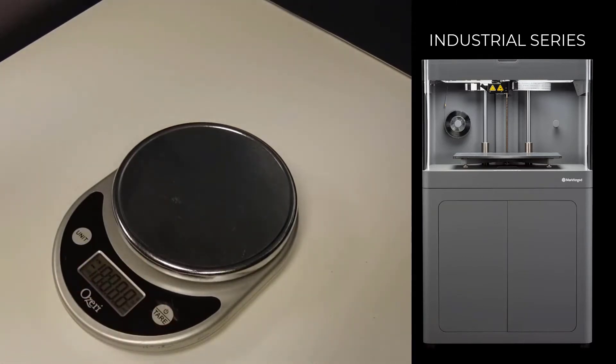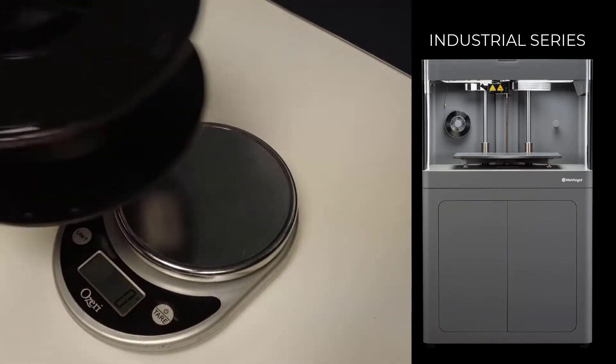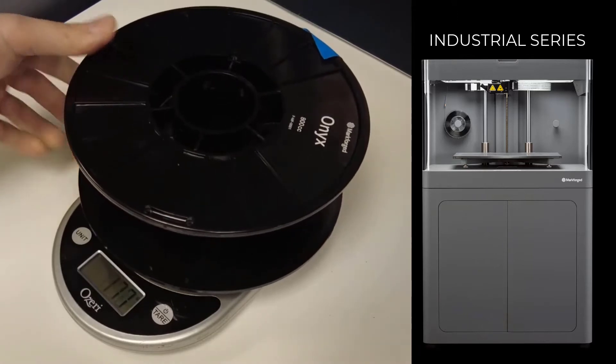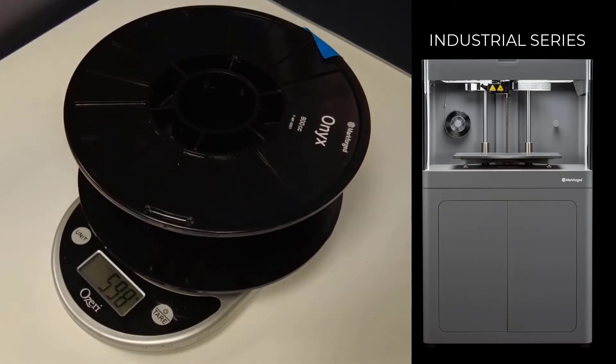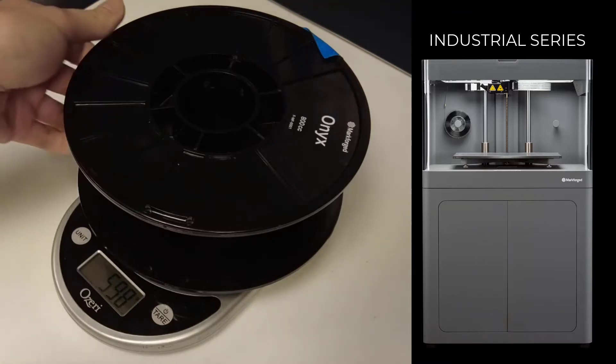If loading a partial spool of material, weigh it and take note of the weight in grams. When you input this value later, the printer will automatically subtract the weight of the spool to obtain the weight of the material itself.